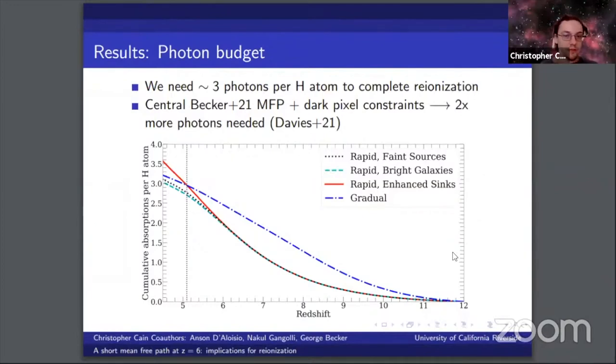However, one caveat to all of our models is that the mean free path we predict intersects the upper one sigma error bar of the Becker et al. 2021 measurement at redshift 6 and has a neutral fraction of about 20 percent.